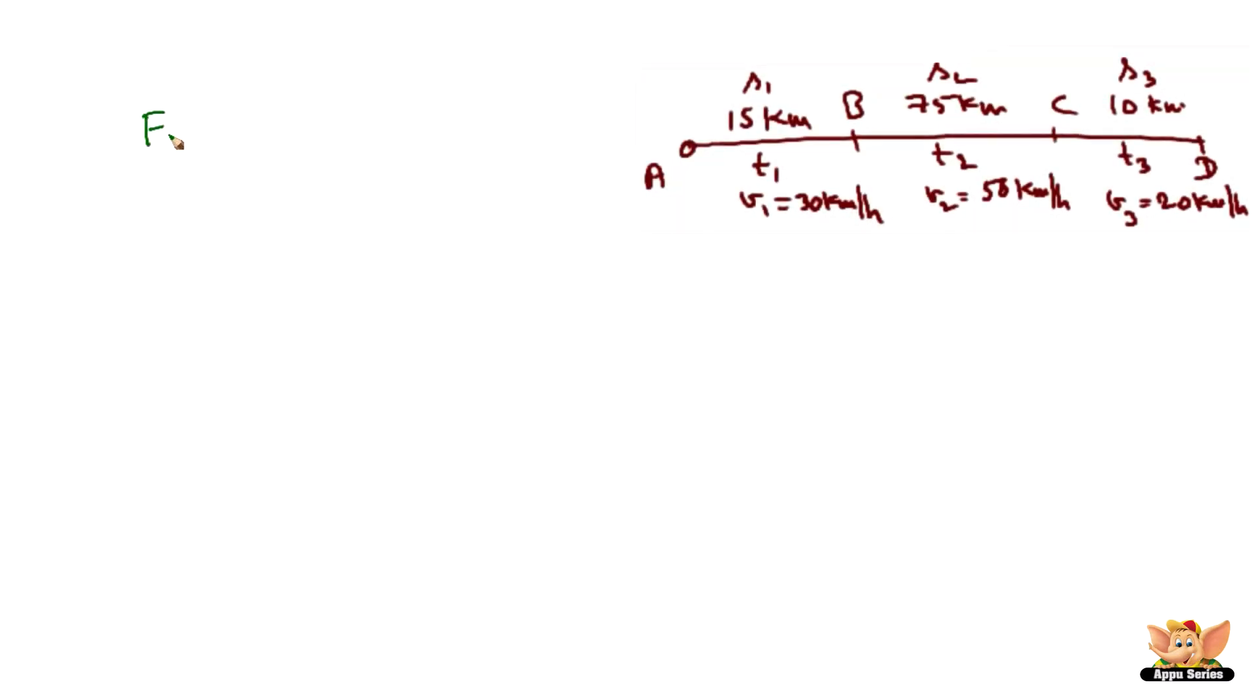Now from A to B, when the train travels from point A to point B, we have S1 which is V1 into T1. S1 is given as 15 km, V1 is 30 km per hour, hence T1 becomes 15 by 30 which is 1 by 2.